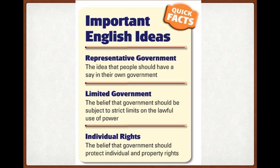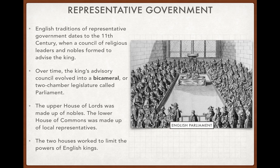Three important English ideals were given to us by the English: representative government, limited government, and individual rights. English traditions of representative government dated to the 11th century, when a council of religious leaders and nobles formed to advise the king. England had a monarchy where the king during early times had absolute power, but in the 1100s AD a group of religious leaders came together to form a council to advise the king on certain things.